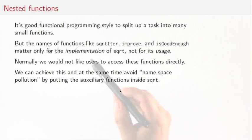But on the other hand, names like square root iter, improve, and is good enough really matter only for the implementation of square root, not for its usage. Normally we would not like users to access these functions directly, so we want to avoid namespace pollution where they would see these names even though they are not supposed to be called directly by them.